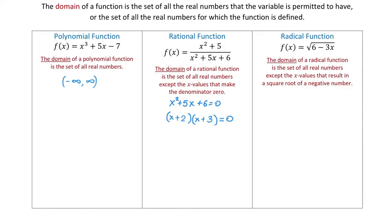Since the product equals 0, we set each factor equal to 0: x plus 2 equals 0, or x plus 3 equals 0. Solving each equation gives x equals negative 2 and x equals negative 3. So the numbers negative 2 and negative 3 make the denominator 0 and we must exclude them from the domain.